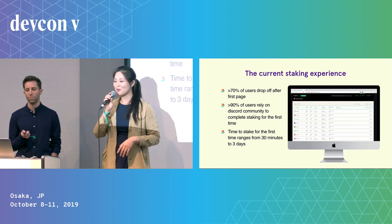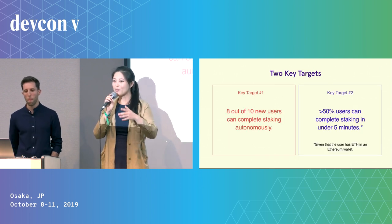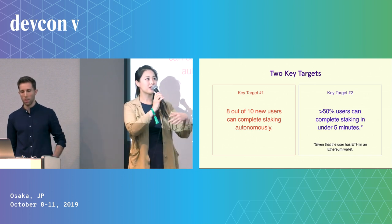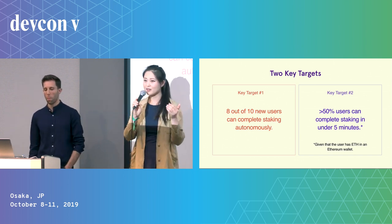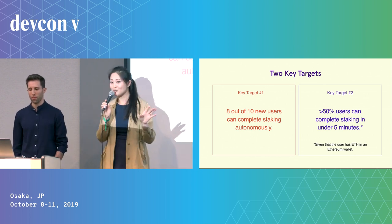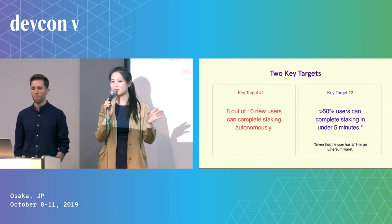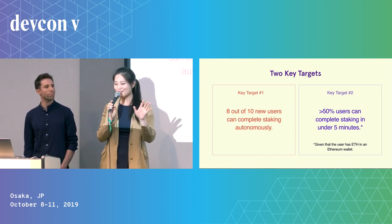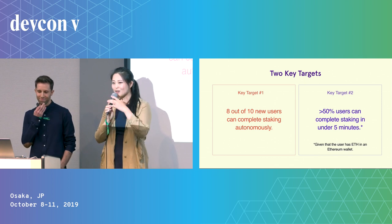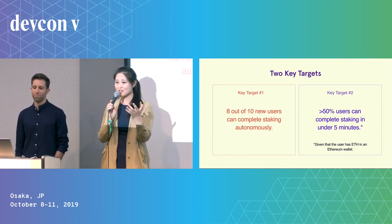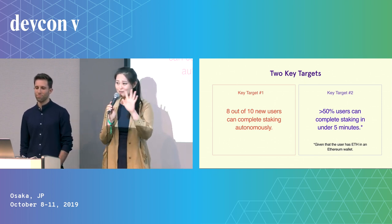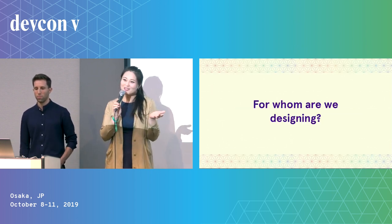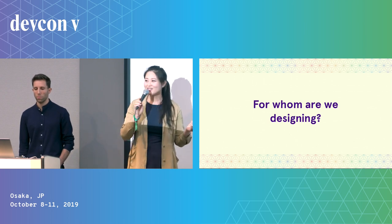That's not acceptable, and it led us to formulate two north stars for our staking app redesign. First, we want 8 out of 10 users to be able to complete staking autonomously, supported by the interface alone — no human intervention. Second, we want more than 50% of users to be able to stake in under five minutes. Those are our two key targets.